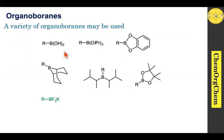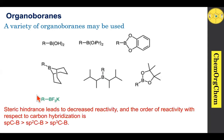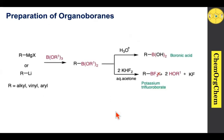A variety of organoboranes can be useful in this reaction, such as organoboronic acid, boronate esters, catecholborane boronate esters, disiamylborane, sterically hindered boranes, and potassium trifluoroborates. Steric hindrance of organoboranes can lead to decreased reactivity in the Suzuki reaction. The order of reactivity shows that sp-carbon boranes are more reactive compared to sp3-carbon boranes.